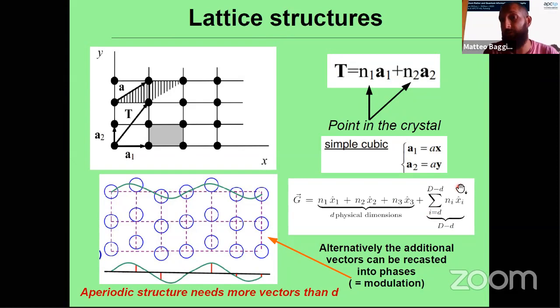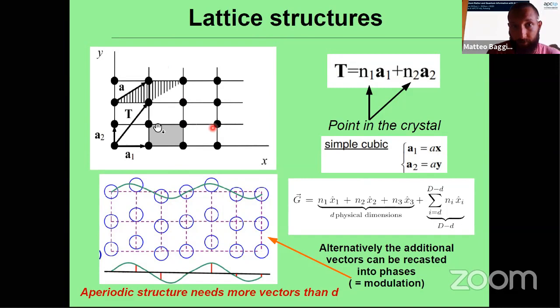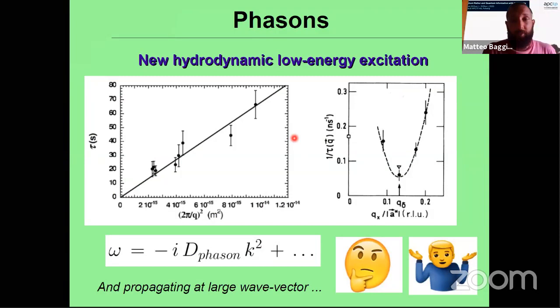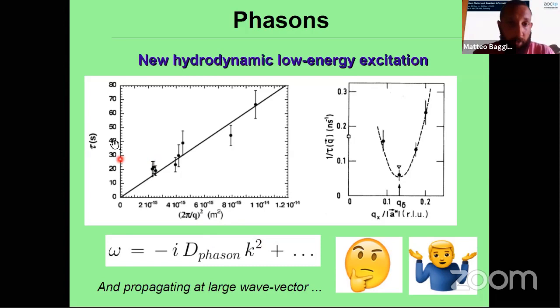This extra phase is the phase of the modulation. What you are doing is taking a crystal and modulating the positions of the atoms with a cosine function with a certain phase. To describe this you need the two vectors of the original lattice plus the phase of the modulation. This leads to something extremely important: the difference between a periodic crystal and a quasicrystal is that in the quasicrystal there is a new low-energy hydrodynamic excitation called the phasen, and it diffuses. Experimental evidence shows the relaxation time scales as q², confirming the dispersion relation is diffusive.